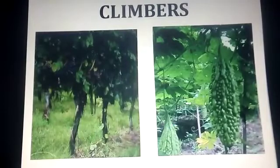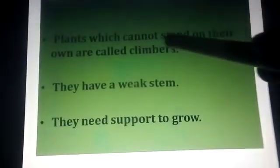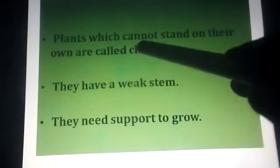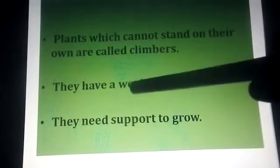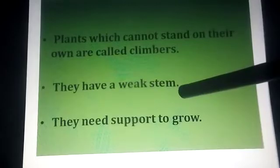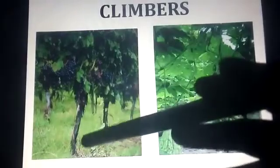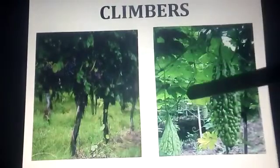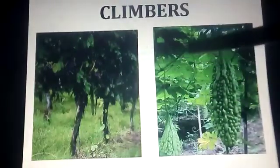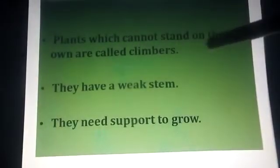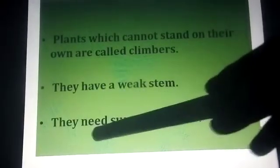Climbers — plants which cannot stand on their own are called climbers. They have a weak stem. They need support to grow. Look at the grapes picture — they wind around a stick and climb upward.